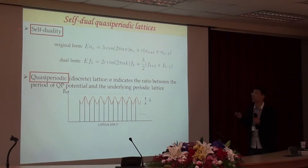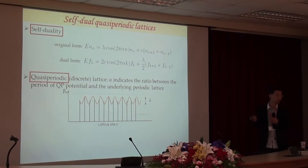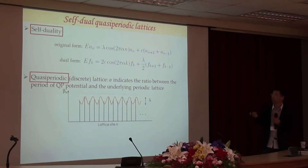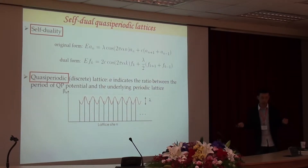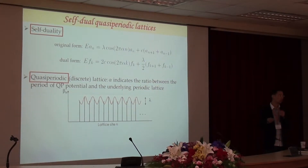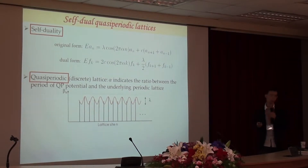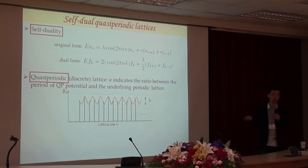However, self-duality alone is not enough. Another factor is quasi-periodicity — alpha should be an irrational number. If alpha is a rational number, for a large system the eigenstate will be a Bloch wave and the state will be delocalized. Combining these two properties leads to the sharp localization transition in the Aubry-André model.